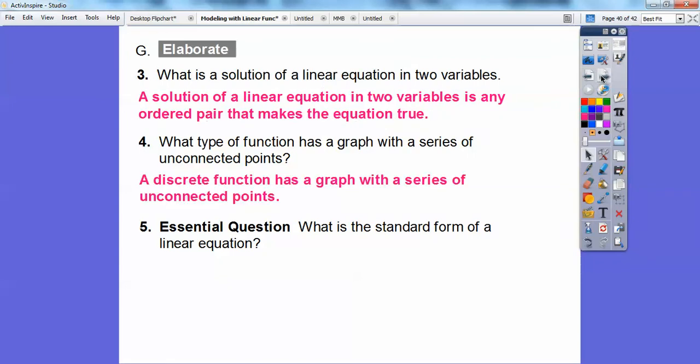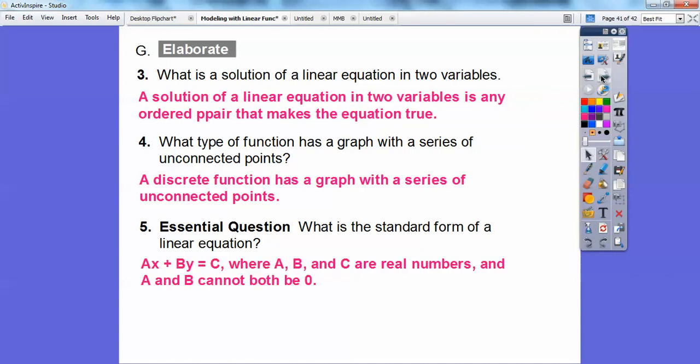A discrete function has graphs with a series of unconnected points. What is the standard form of a linear equation? That is ax plus by equals c. Remember, a and b both can't be zero. One of them could be zero, but not both of them can be zero.